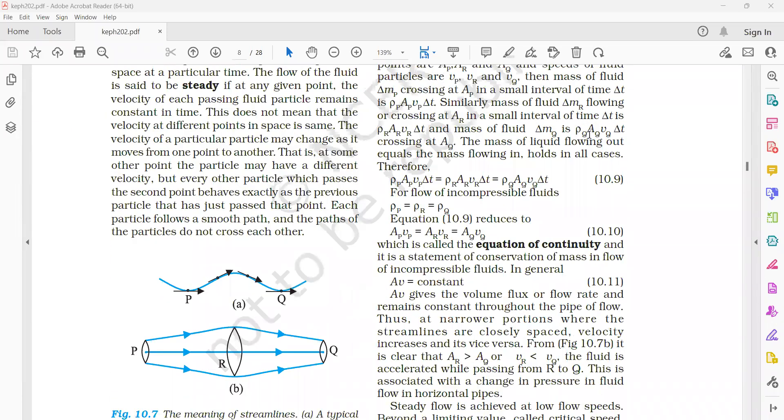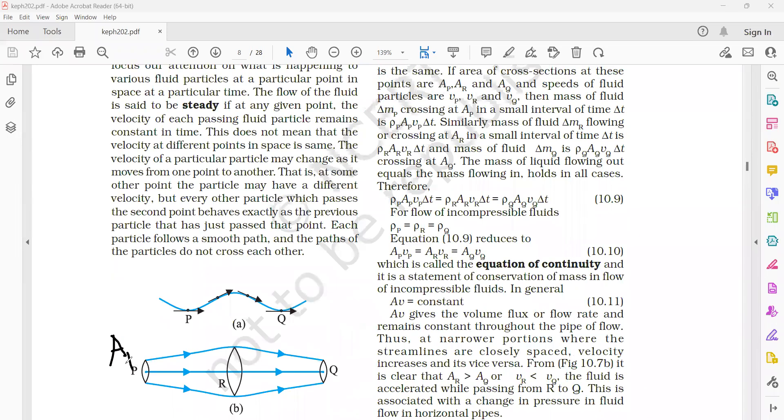Now we consider three points here. One is P and the second one is R and the third one is Q. If the fluid particle started from P through R, it is traveling to Q. Now the area at P is A subscript P and area at R is A subscript R and area at Q is A subscript Q.